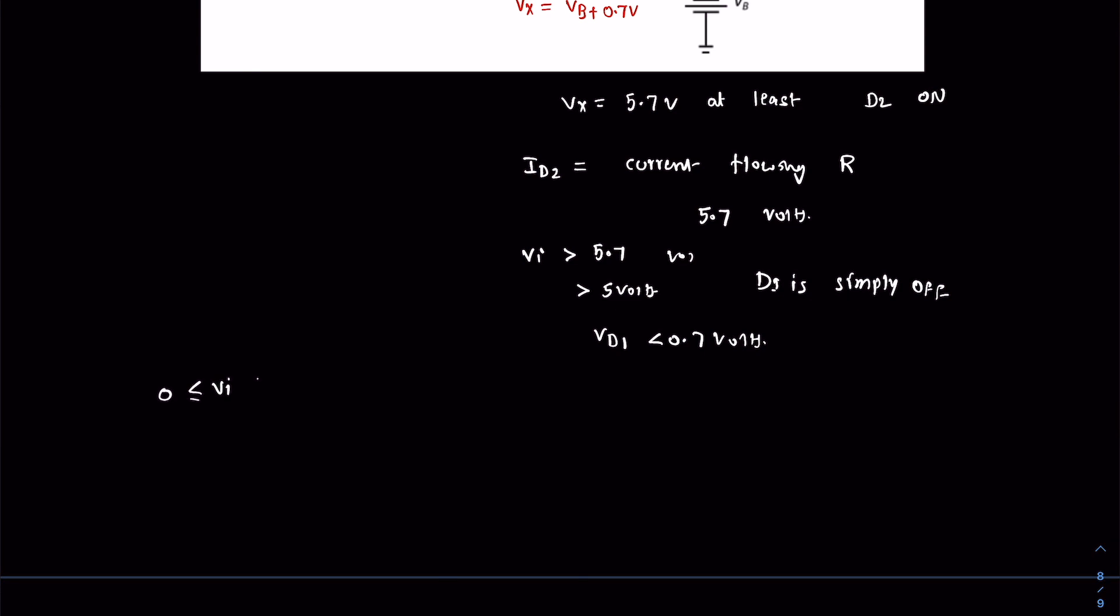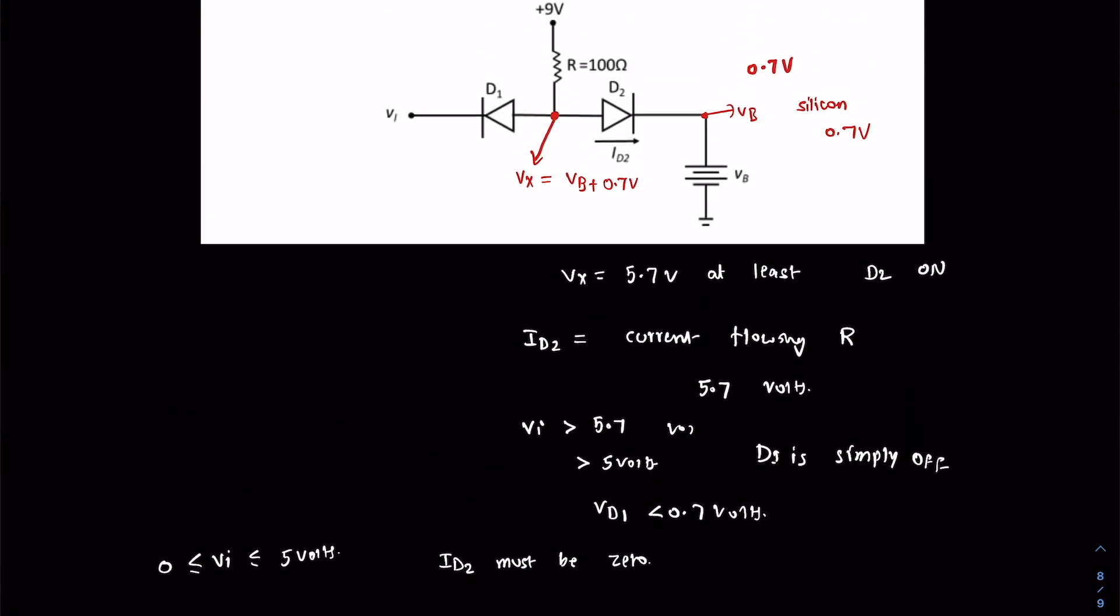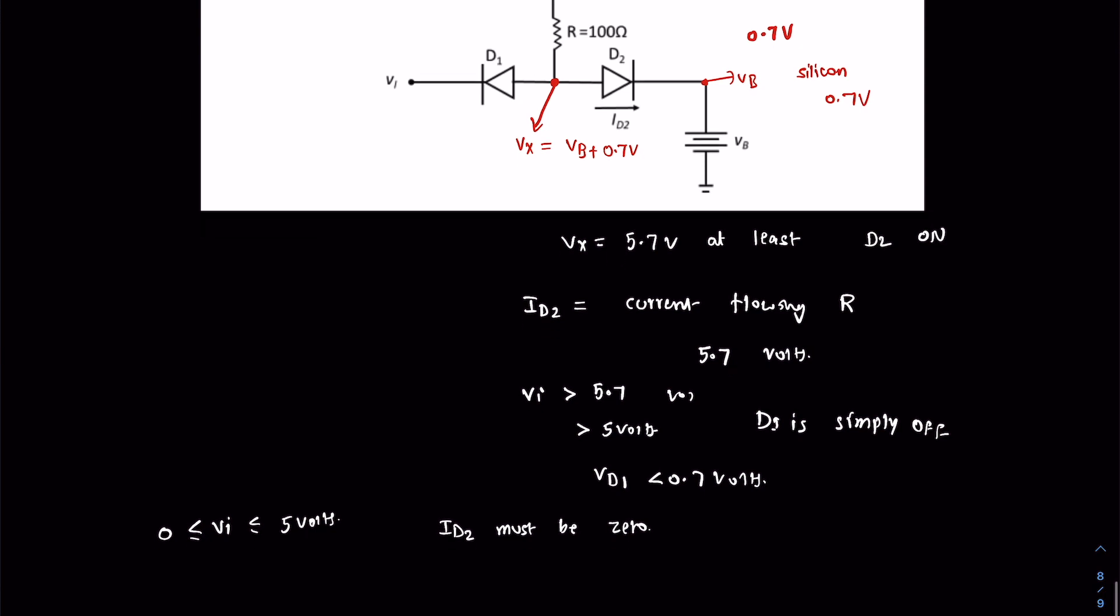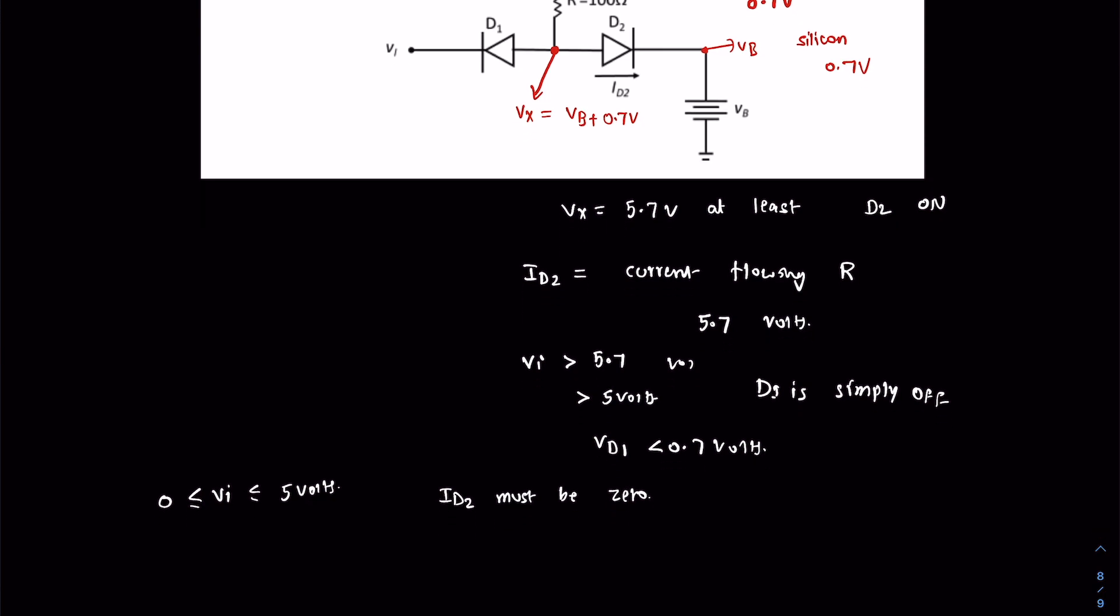Now whenever VI is up to 5 volts, the node voltage VX always tries to be at the lower value of the voltage, but not at VX equals 5.7 volts. Let's say for example if VI is 2 volts.